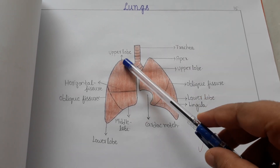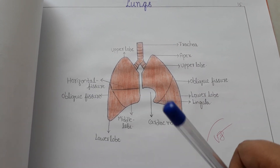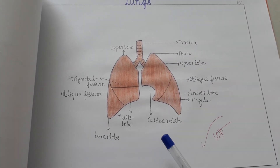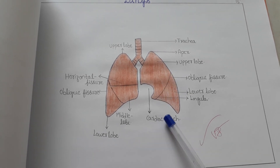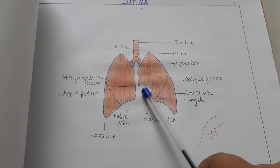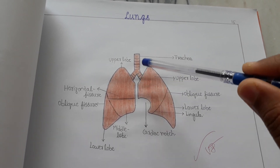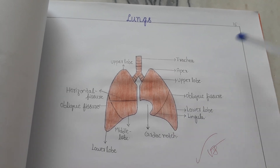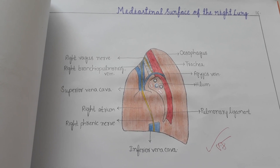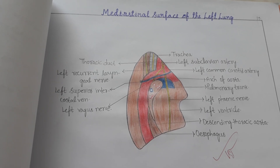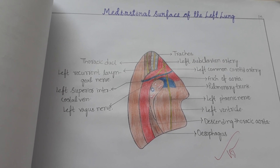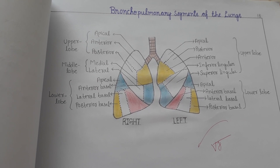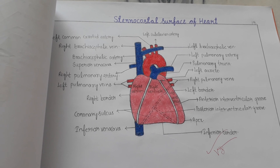This is the upper lobe, lower lobe, middle lobe, trachea, apex, oblique fissure, and cardiac notch. Any part will be pointed and you have to answer and give an explanation. This is the mediastinal surface of the right lung and the mediastinal surface of the left lung. This is the bronchopulmonary segments of the lung, and this is the sternocostal surface of the heart.